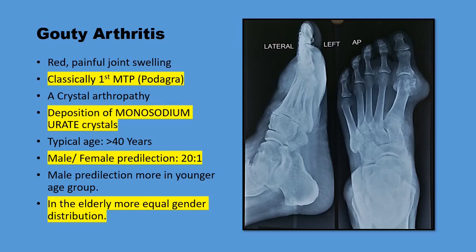Gouty arthritis is a condition where there is redness and painful swelling of one or few joints in the foot or hand. Classically, the base of the first toe is affected, when it is known as podagra. It is a type of crystal arthropathy.